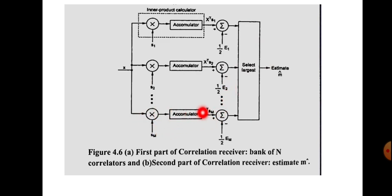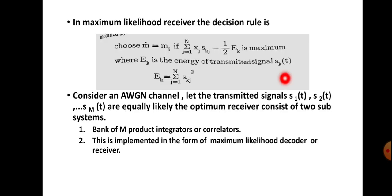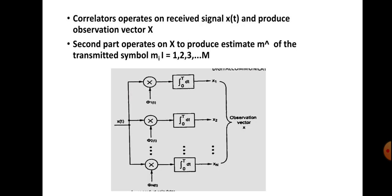The two parts of the correlation receiver are shown in this diagram. The first section is the correlators. What the correlators are doing is operating on the received signal x(t) and producing the observation vector x. We are transmitting signals s1(t), s2(t), up to s-m(t) through the AWGN channel. Noise is added in the channel so the received signal is x(t).